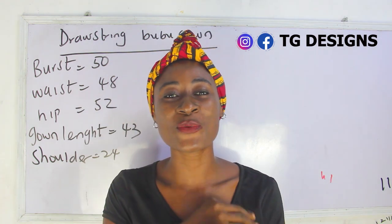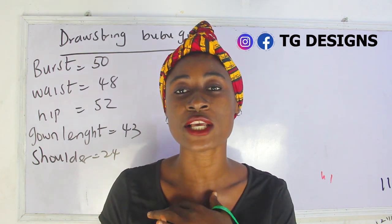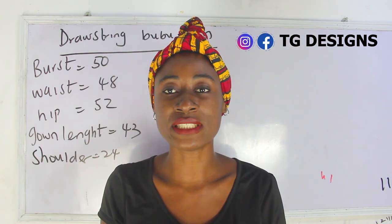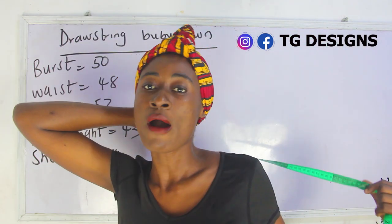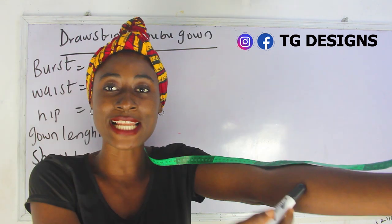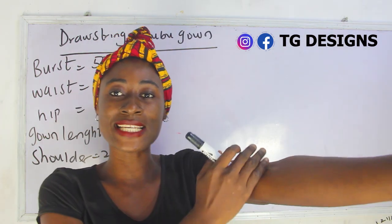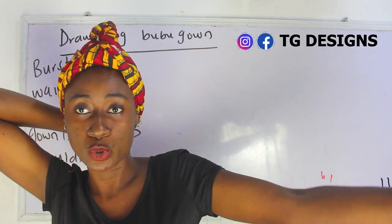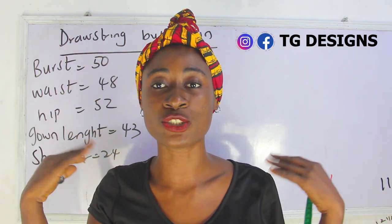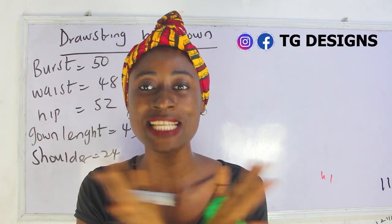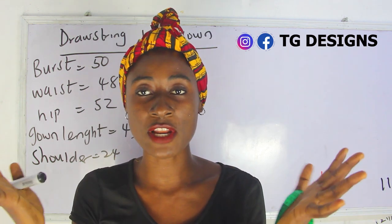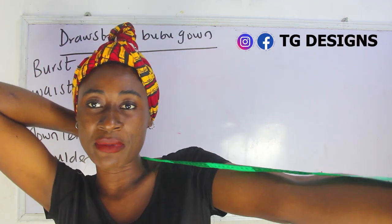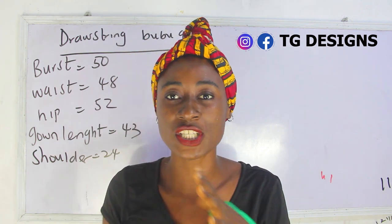There are two ways to achieve your shoulder measurement. The first way is to add your shoulder plus your sleeve length. The second way is to take your measurement directly — from your shoulder to your desired length of the booboo dress, which can be somewhere around the knee or ankle depending on how long you want it. For example, if your shoulder measurement is 14 divided by 2 you have 7, plus your sleeve of 10 inches. For me, I have 24 inches.